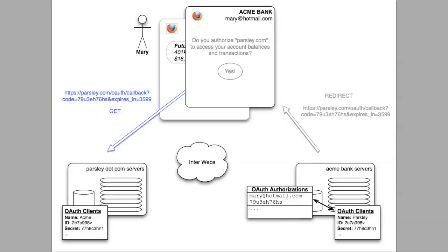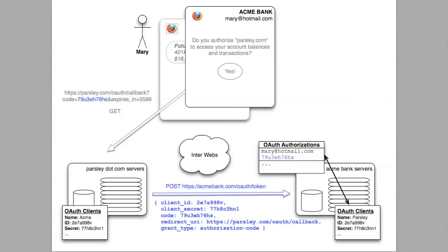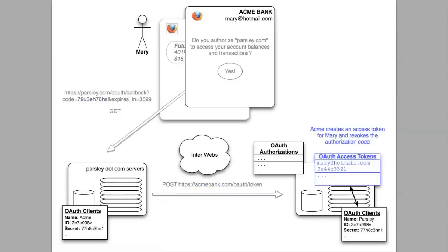The browser receives the redirect response and attempts to get that URL from Parsley. What's really happening is that Mary is letting Parsley know she's authorized the token grant and passing along the corresponding authorization code. Now Parsley, seeing Mary has passed along the authorization code, can acquire the access token. Parsley makes the token request passing along the client ID and the authorization code, and the client secret is passed along as well, as that will be needed to verify the authorized code. Acme recognizes the authorized code and creates Mary's access token, and the authorization code is revoked at this point.